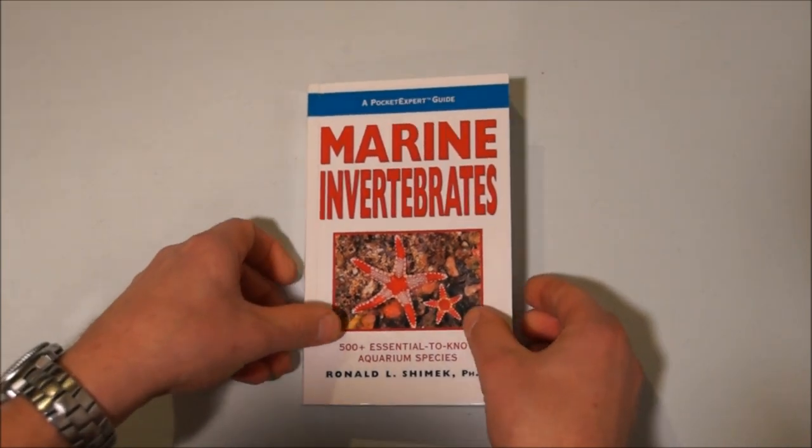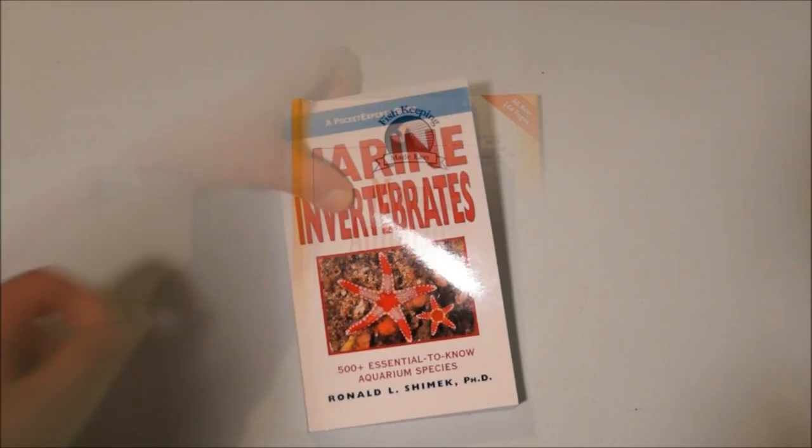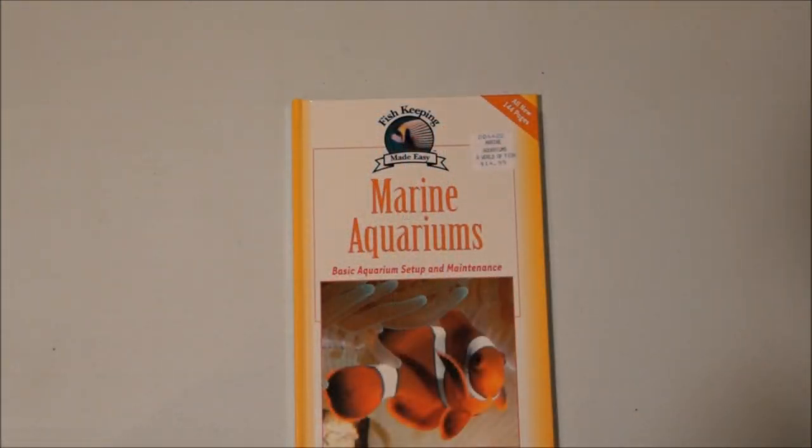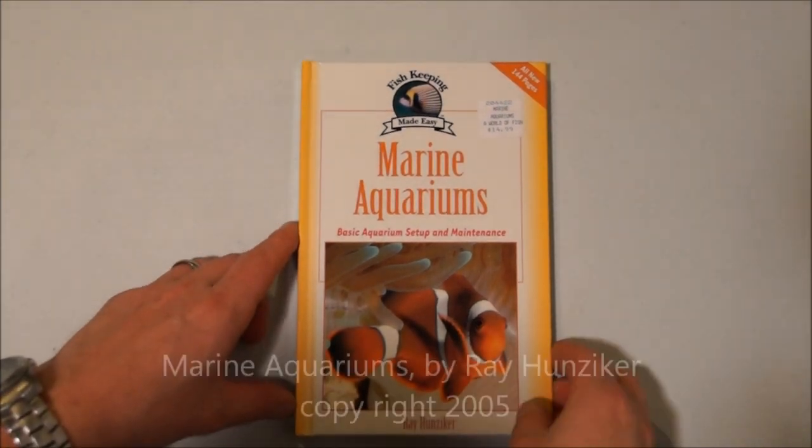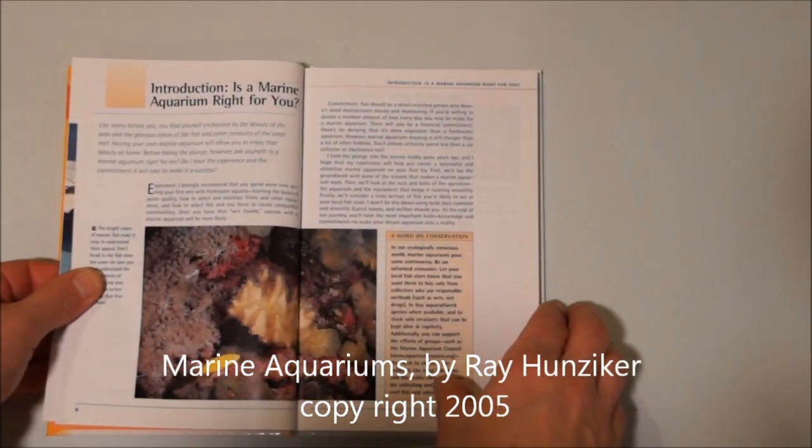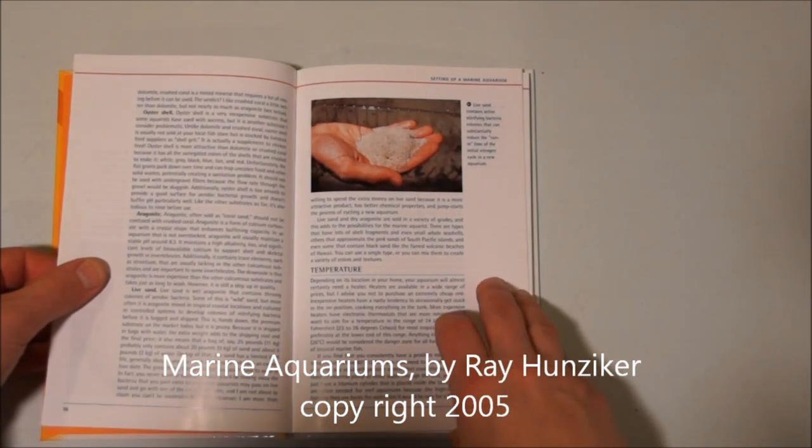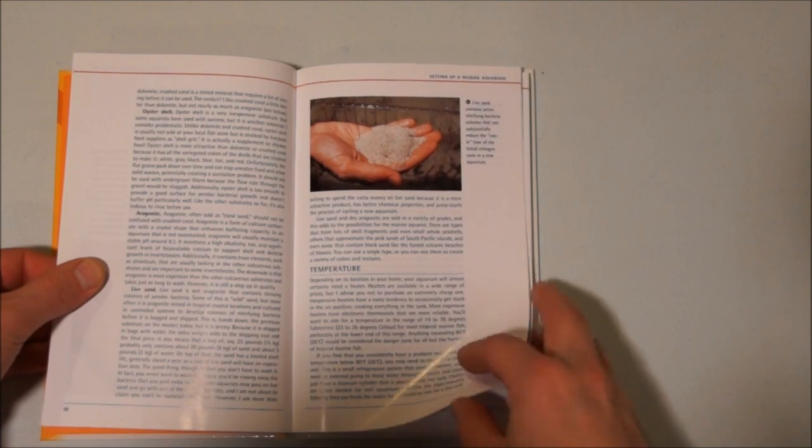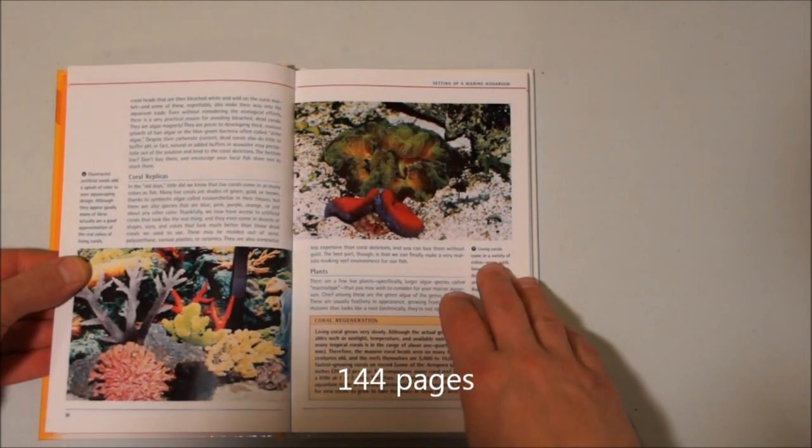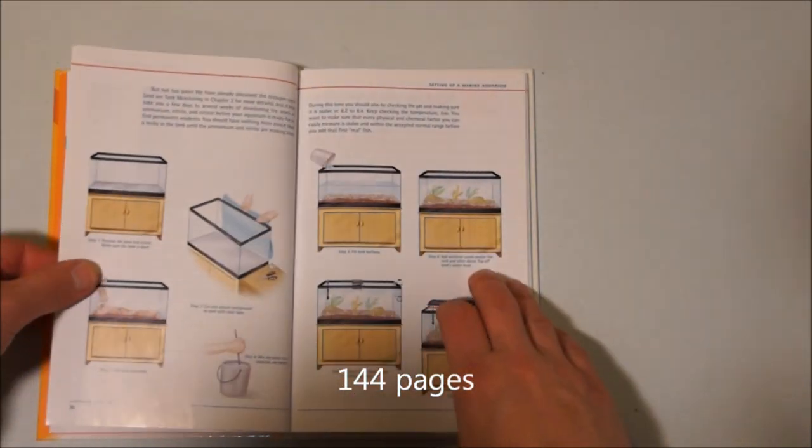The next book I'm going to choose kind of backpedals again back to basic aquarium setup. As you can see I put these books kind of in order by copyright date. This one is called Marine Aquariums Basic Aquarium Setup and Maintenance by Ray, copyright 2005. Good basic starter book.